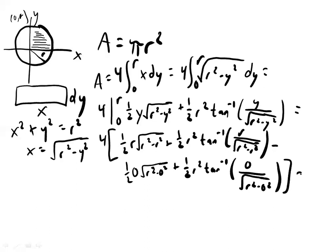And so if we look at all this, what do we have? Here we have a 0, so this term goes away. Here we don't have a 0. We have 1 half r squared times the tan inverse of r over 0.